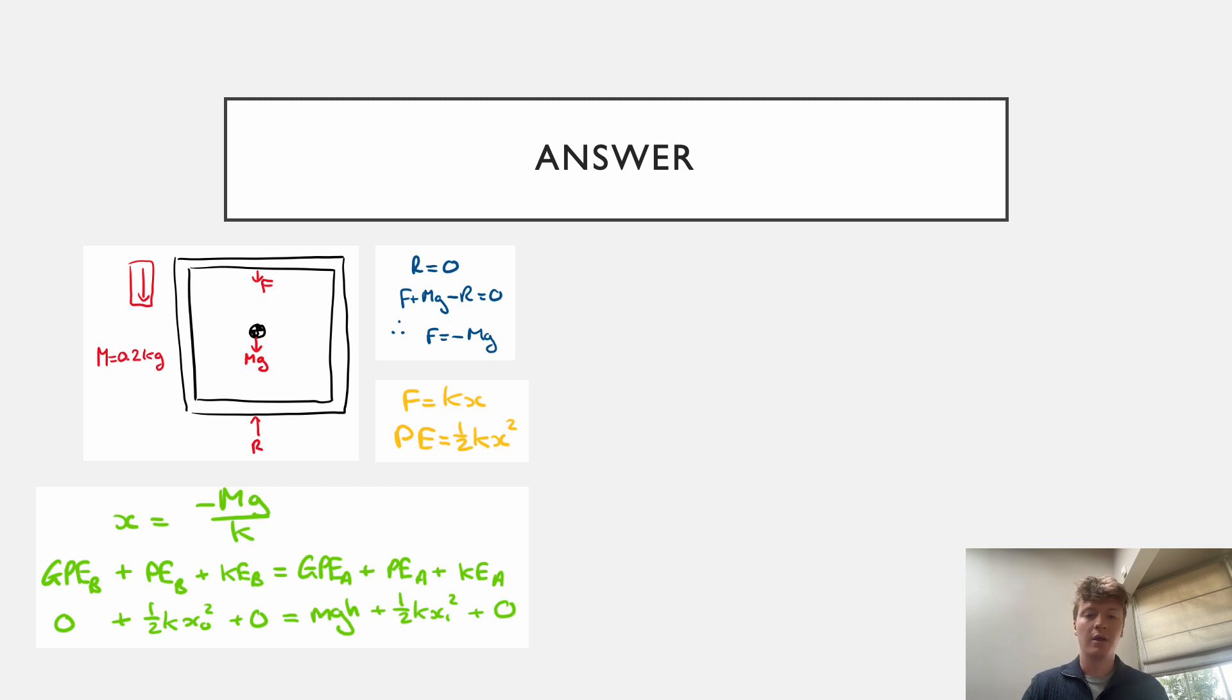So after that, I've written down an energy balance equation. So for b is before the subscript, a for after. We're basically saying that the gravitational potential, the sum of the gravitational potential energy, the spring potential energy and the kinetic energy of the system is equal before and after.